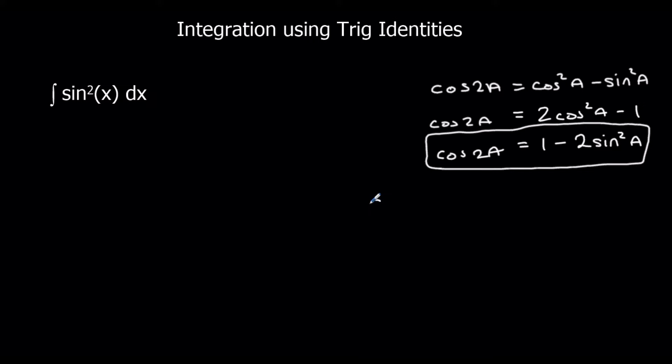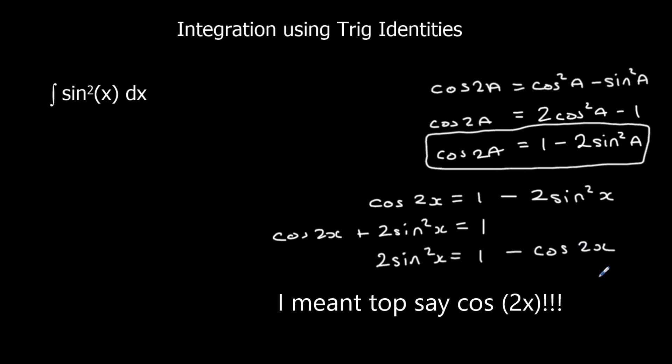So firstly I'll change them to x's. So we've got cos2x equals 1 minus 2sin²x. And then I need to make sin²x the subject of the formula. So I'm going to plus 2sin²x to both sides. So cos2x plus 2sin²x equals 1. Subtract cos2x from both sides. So 2sin²x is 1 minus cos2x. And then divide each term by 2. So sin²x is now by itself and it's equal to half minus half cos2x.